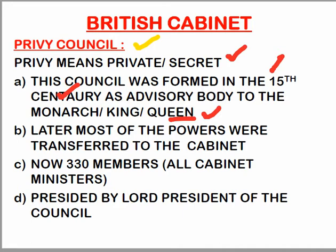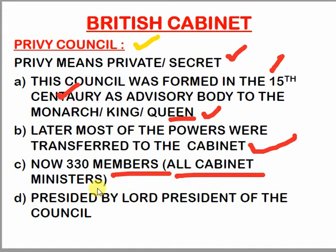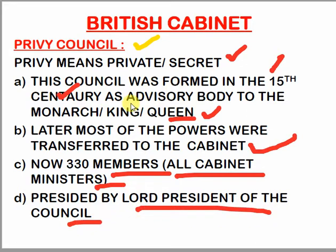Later on, when more democratic government arrived after the Glorious Revolution, most of the powers were transferred to the cabinet. But still this Privy Council exists. It has around 330 members. All cabinet ministers are there, along with several other appointees — lords, etc. It is presided over by the Lord President of the Council, a minister I mentioned earlier.